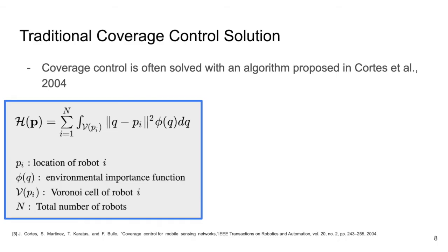In the original Lloyd's algorithm proposed by Cortez, n robots follow the spatial gradient of the cost function defined on the left, where pi is the position of robot i, v of pi is the Voronoi cell created using the robot locations as seeds, and phi of q is the environmental density or importance function.